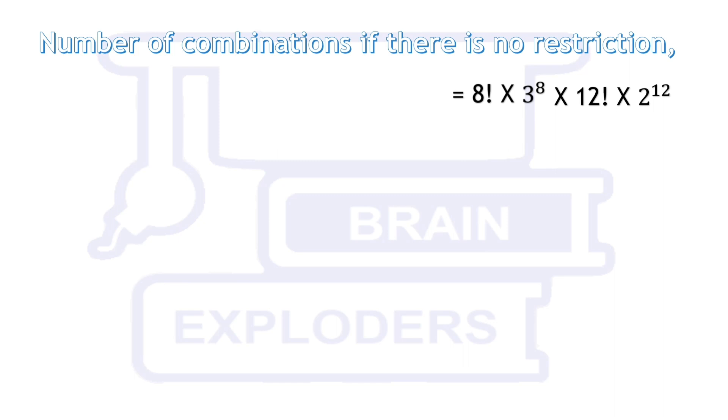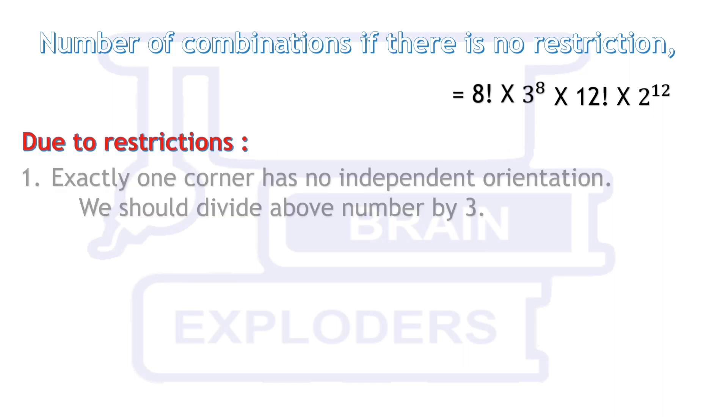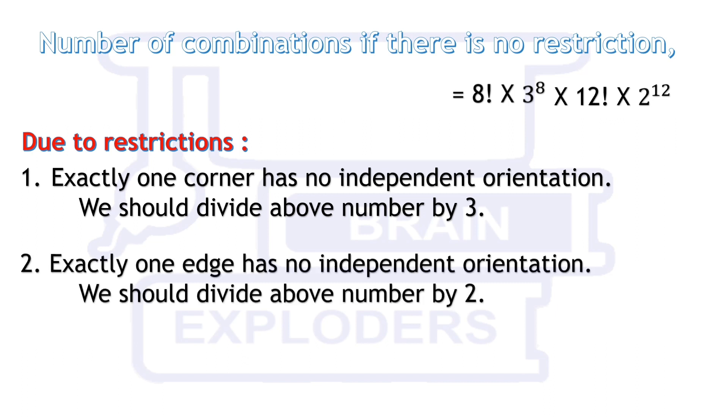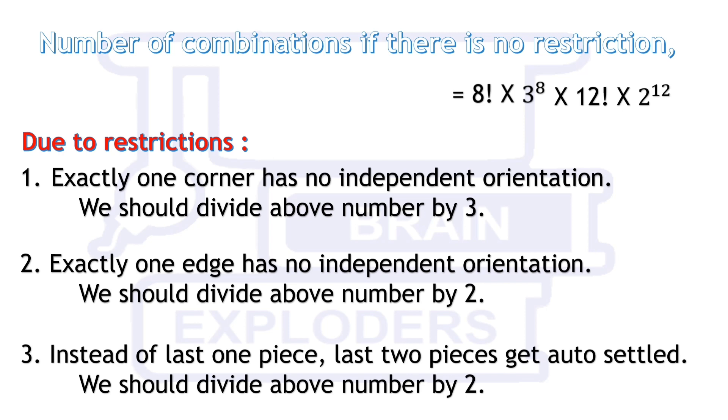But due to the restrictions, we get that exactly one corner has no independent orientation. It depends on another seven corners. Therefore, we should divide this number by 3. Exactly one edge has no independent orientation. It depends on twists of another eleven edge pieces. Therefore, we should divide the above number by 2. And similarly, for the third restriction, instead of the last one piece, last two pieces get auto-settled. Therefore, we should divide the above number by 2.